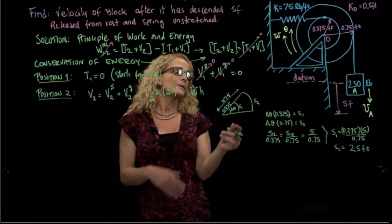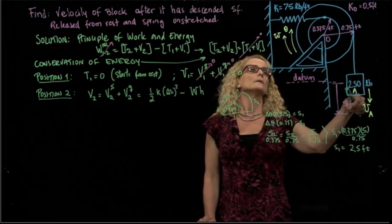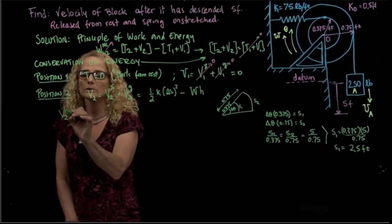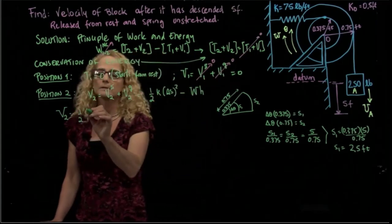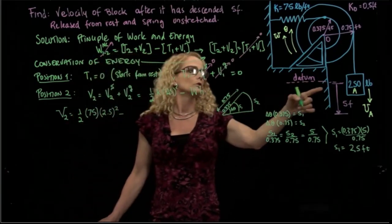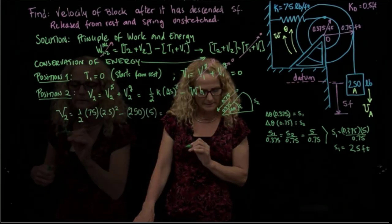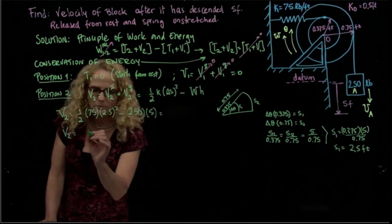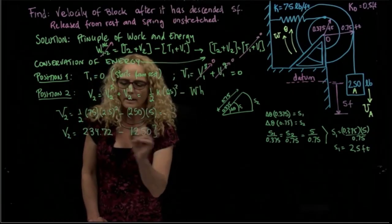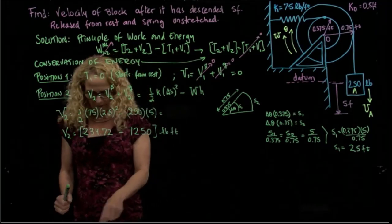We will also need this displacement relation for the velocity calculation. Now we can calculate the potential energy in position two. It equals one-half times k — which is 75 — times 2.5 squared, minus 250 times 5. That gives 234.72 minus 250, in pound-feet. So we have calculated V2.